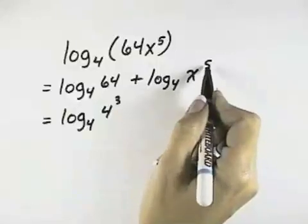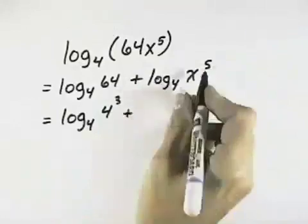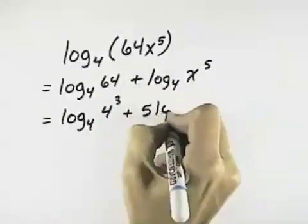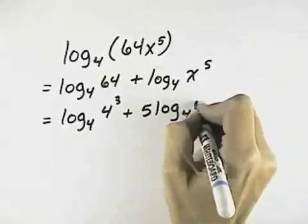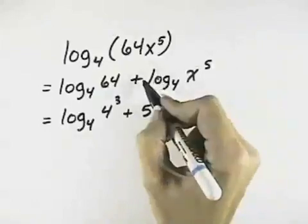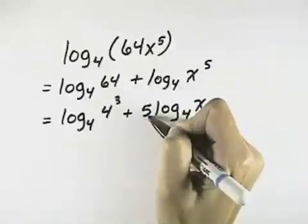The power rule also allows us, in this case, we could bring the power for our second log out in front. When we have an exponent, that can come out in front as a constant multiple of your logarithm, so that we have 5 times the log base 4 of x, pulling down the exponent of 5 to be a product out in front.